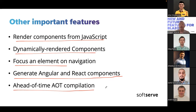Remember, .NET 7 is not a long-term support version. This means we can use it in production, but the idea is to migrate to the LTS version, which will be .NET 8 next year. If your application is already in production and working fine and you don't need .NET 7 features, you can stay on .NET 6 for a long time and wait for .NET 8. But if you are starting a new project or proof of concept, you can use .NET 7 to see all the new features.